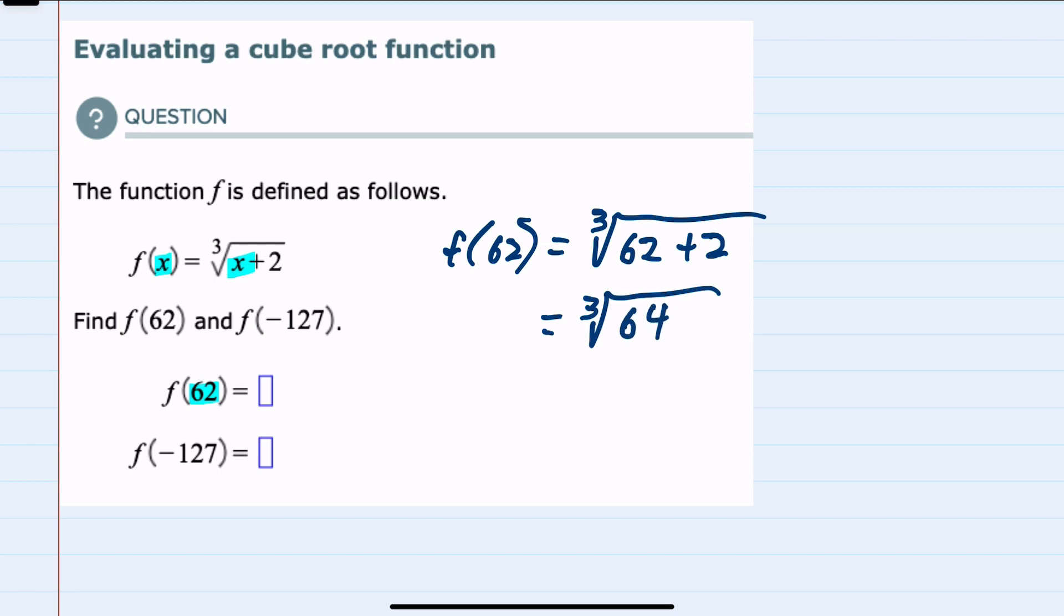And since it's a cubed root, the question that a cubed root asks is what number written three times and multiplied would give me 64. And since 64 is 4 times 4 times 4, the cubed root of 64 is 4. So f of 62 is 4.